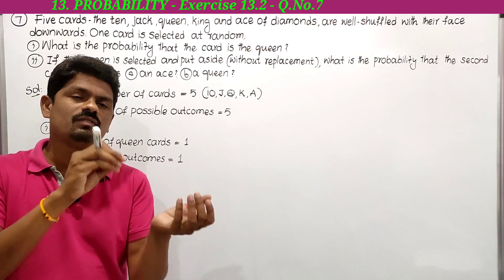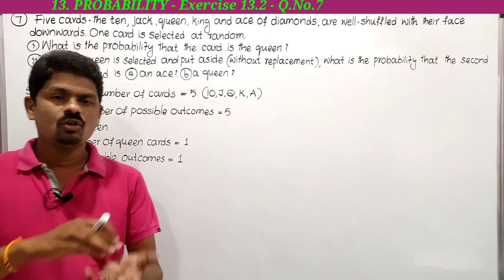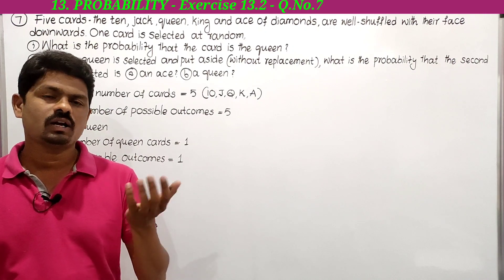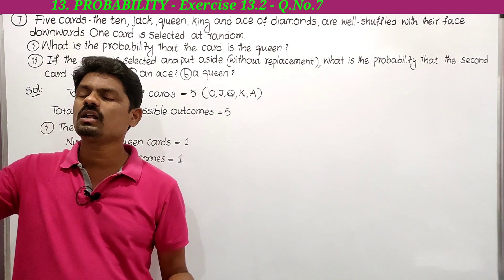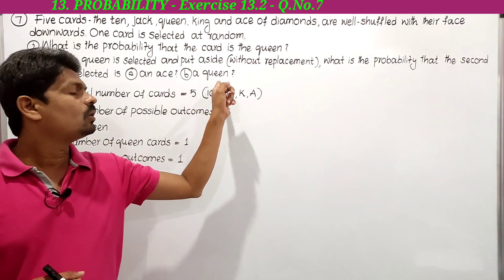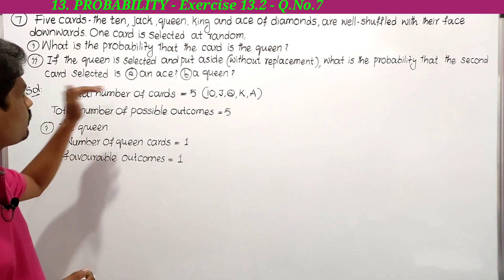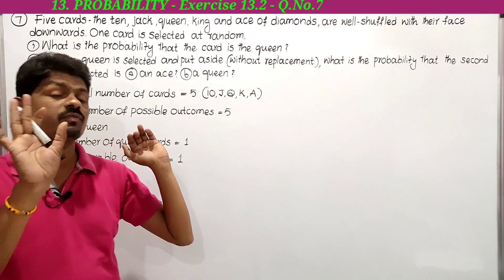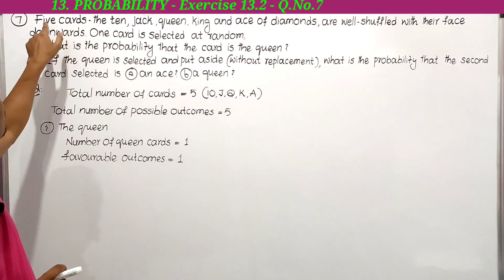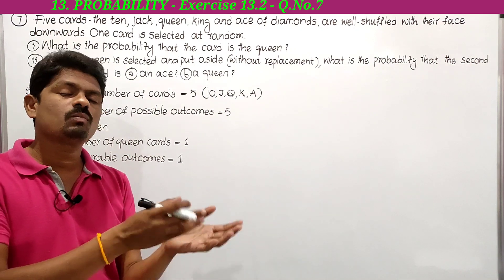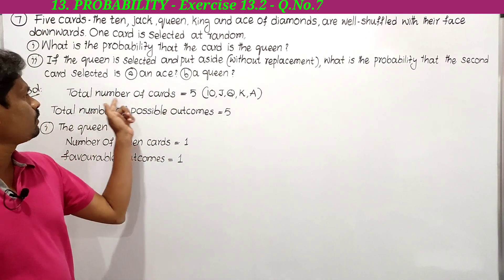So five cards will be well shuffled. The total number of cards in the experiment is equal to 5. Remember, the total number of cards here is not 52 — don't confuse. The total number of cards here is 5.